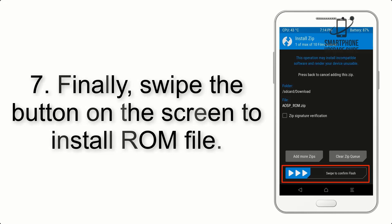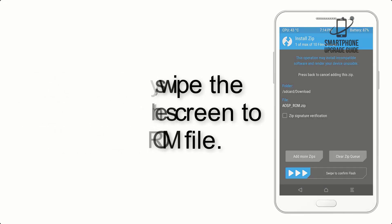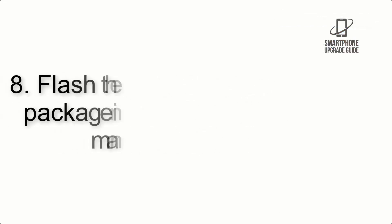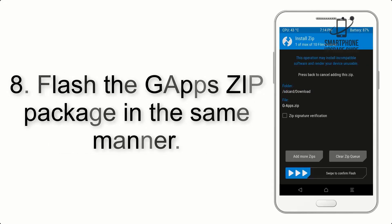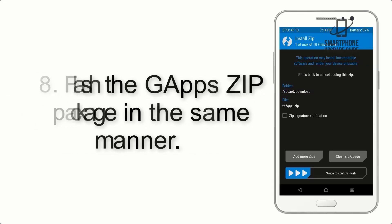Step 7: Finally, swipe the button on the screen to install the ROM file. Step 8: Flash the GApps zip package in the same manner.